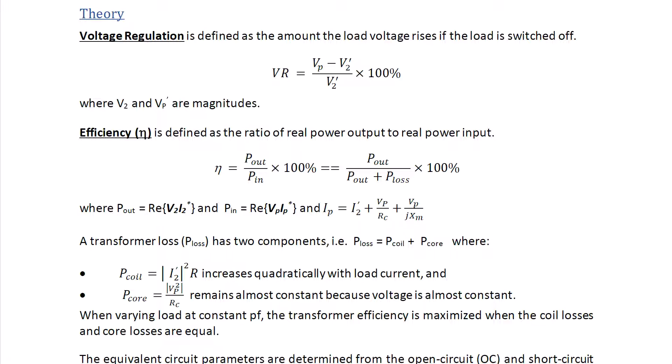The definition of efficiency is defined as the ratio of the real power output to the real power input. The efficiency equals Pout over Pin times 100, or Pout over Pout plus Ploss times 100. Note that we can find the output average power as the real part of V2 I2 conjugate, and the real power for the input Pin as the real part of Vp Ip conjugate, where Ip equals I2 prime plus Vp over RC plus Vp over jXM.